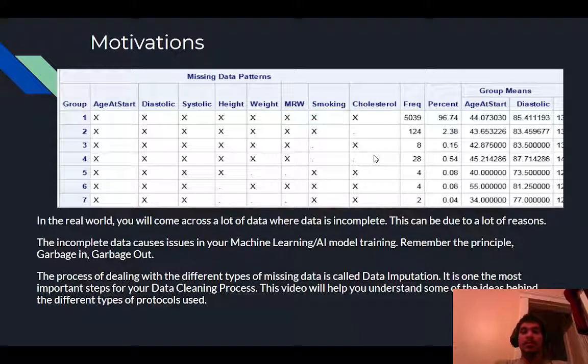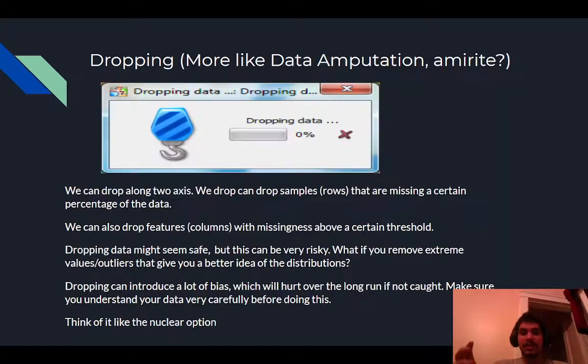So if we just feed in garbage data to our machine learning model, it's not going to be able to learn it. So data imputation basically looks at different ways we can tackle missing data from machine learning models. This is probably one of the most important and overlooked steps in our machine learning pipeline. So make sure you really understand this and watch this video until the end because it's very crucial.